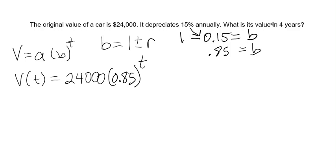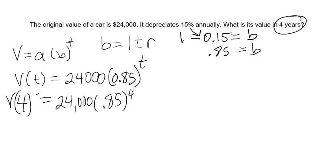If we wanted to answer the question, what is its value in four years, four represents time, so we would substitute four for T. V of four is equal to 24,000 times 0.85 to the fourth power. And when we do 0.85 to the fourth power first, then take that answer and multiply by 24,000, we get $12,528.15.